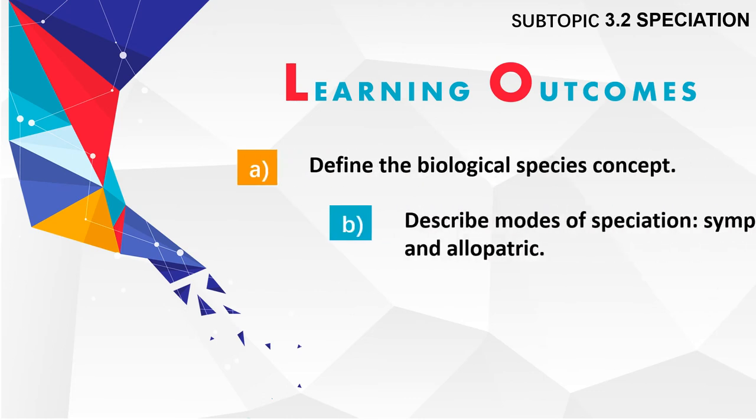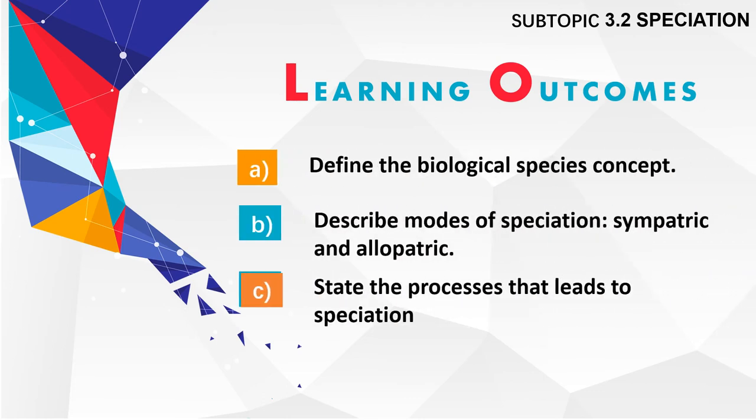An optimum combination in tenera results in 30% more oil per land area than the dura variety. Subtopic 3.2 Speciation. Learning outcomes: define the biological species concept, describe modes of speciation — sympatric and allopatric — and state the processes that lead to speciation.